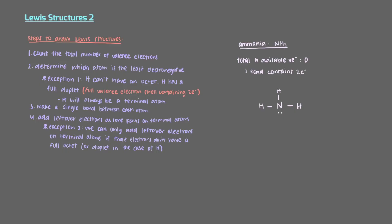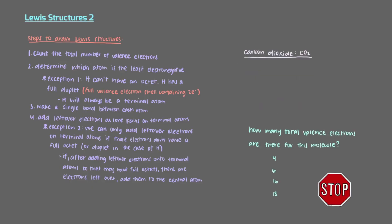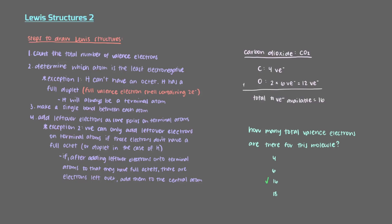Another time that we must add lone pairs to the central atom is if, after adding leftover electrons onto terminal atoms so that they have full octets, we still have electrons left over. Let's now take a look at another molecule, carbon dioxide. How many total valence electrons are there for this molecule? Carbon has 4 valence electrons and each of the oxygens have 6 valence electrons, which brings our total to 16 valence electrons.